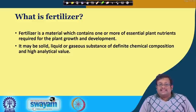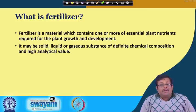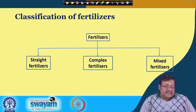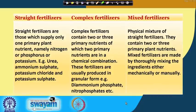If we classify fertilizers there will be three major classes. First is straight fertilizer, second is complex fertilizer, and finally mixed fertilizer. Straight fertilizers are those which can supply only one primary nutrient — namely nitrogen, phosphorus, or potassium — for example urea, ammonium sulphate, potassium chloride, and potassium sulphate.